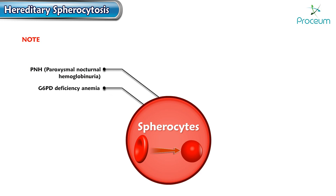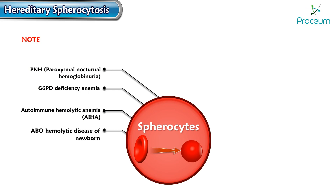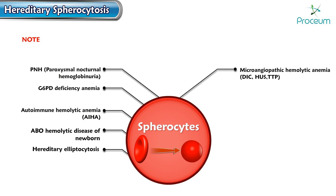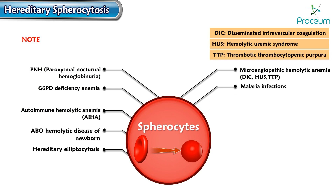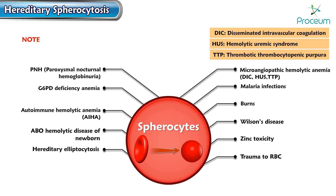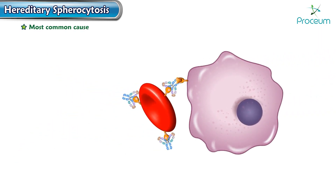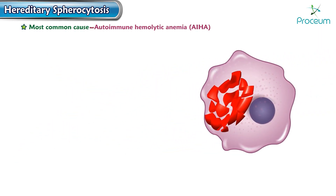Other conditions causing spherocytes include G6PD deficiency, autoimmune hemolytic anemias, ABO hemolytic disease of the newborn, hereditary elliptocytosis, microangiopathic hemolytic anemias such as DIC, HUS, or TTP, malaria, infections, burns, Wilson's disease, zinc toxicity, and trauma to the RBC. The most common cause of spherocytosis is autoimmune hemolytic anemia.